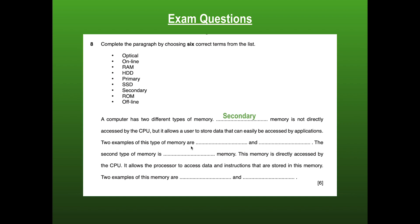Next, it says there's two examples of this type of memory. So those two different examples were our hard disk drive, and our solid state drive. In this example, it won't matter if you put HDD or SSD first. Either answer order is fine. Now, the second type of memory is, well, there's only two types inside of the computer. We've already identified secondary, so we can assume that this one will be primary. But before we agree to that, let's double check the next line. So it says this memory is directly accessed by the CPU. So we know that it's definitely a primary memory. Only primary memory is directly accessed by the CPU.